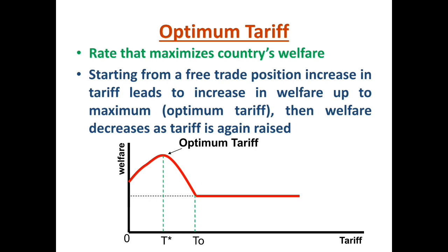One of the celebrated theorems as far as the imposition of tariff is concerned is the Stolper-Samuelson theorem. Wolfgang Stolper and Paul Anthony Samuelson introduced this theory in their work 'Protection and Real Wages' published in 1941. Basically, this theory analyzes the income effect of tariff, and later this theory was used to explain the income effect of international trade in general.